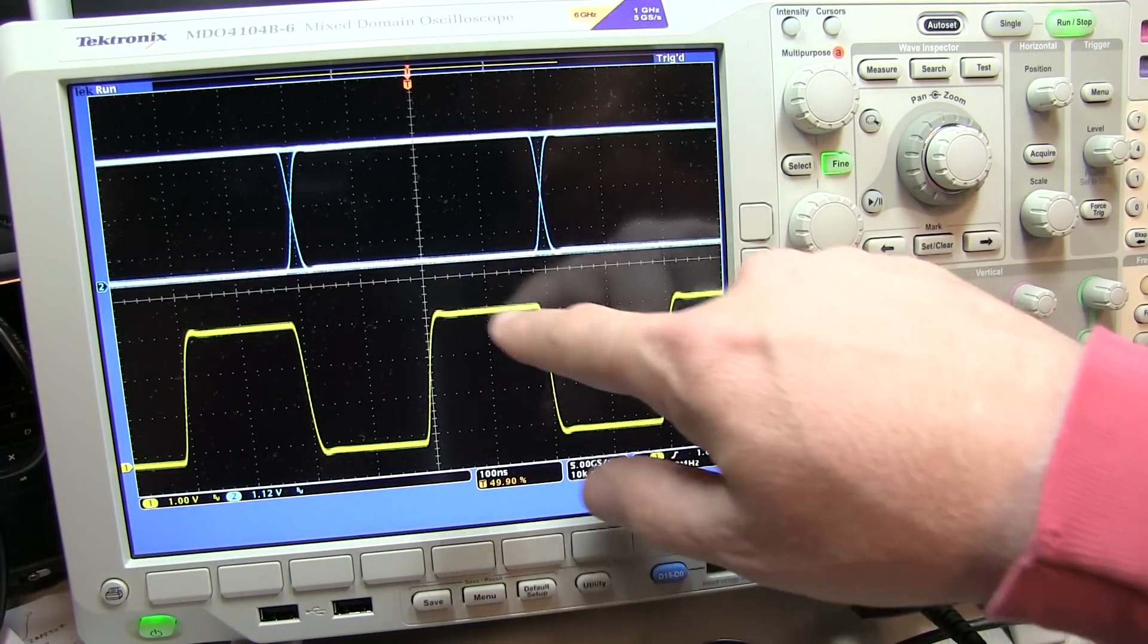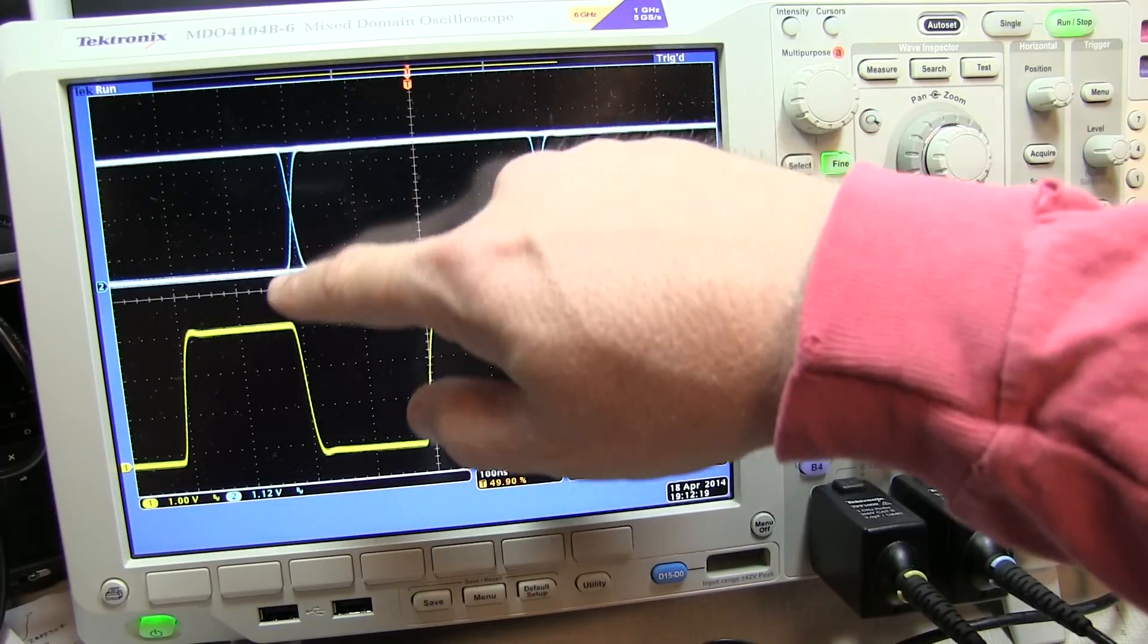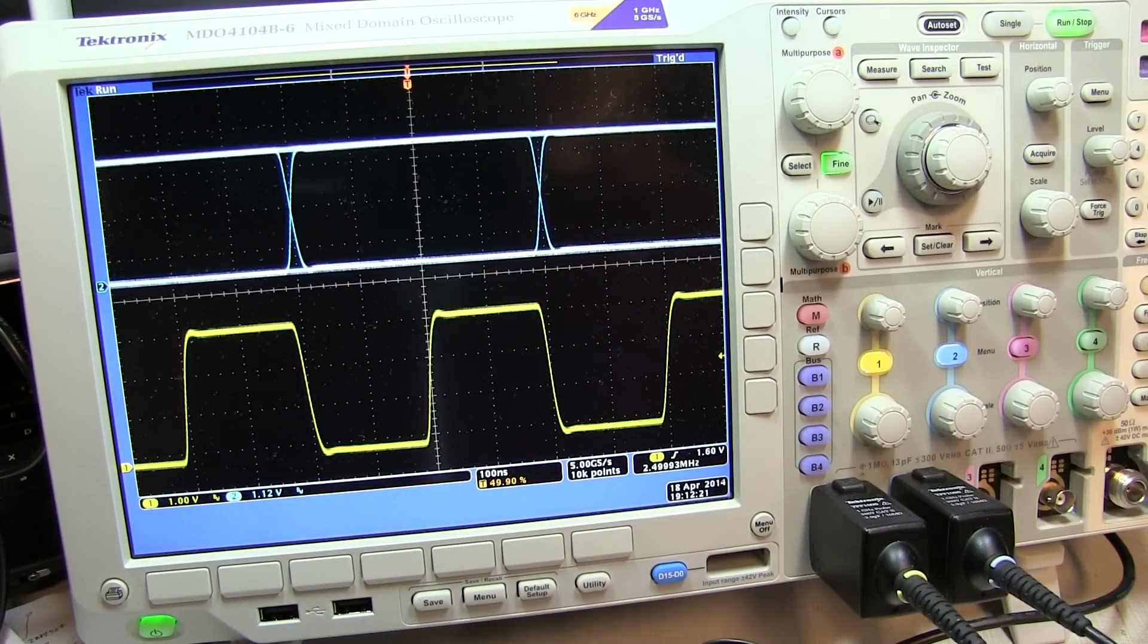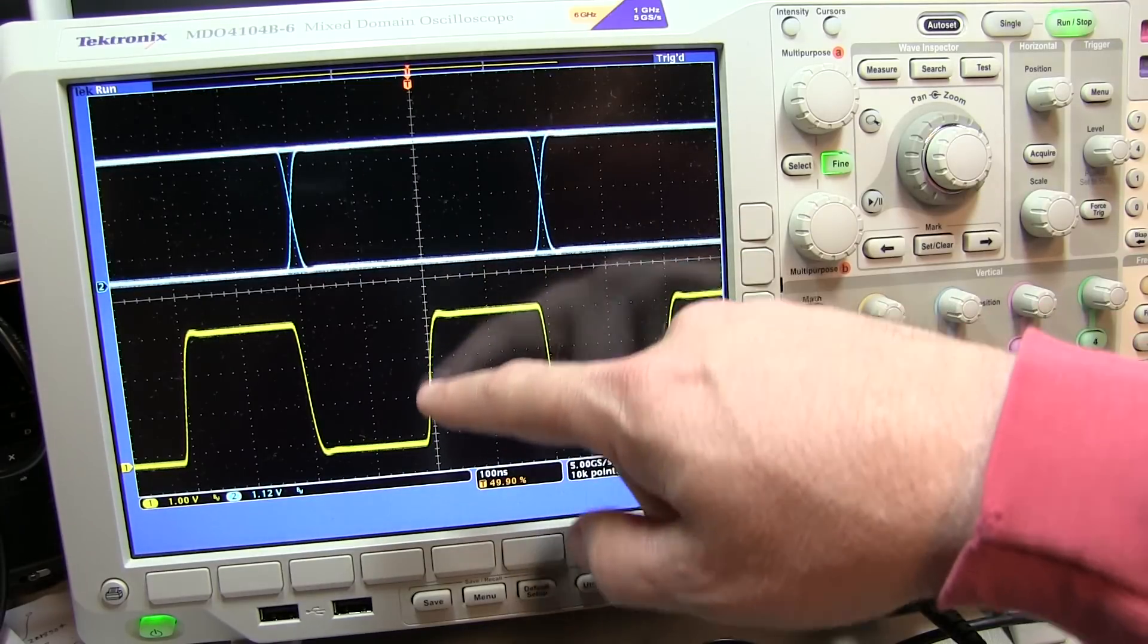And sometimes you don't have a clock at all. So what happens in that case, you might choose to trigger on the rising or falling edge of the data itself. And you can do that, and sometimes we call that a poor man's eye, because what will happen is whatever you trigger on essentially becomes very stable.